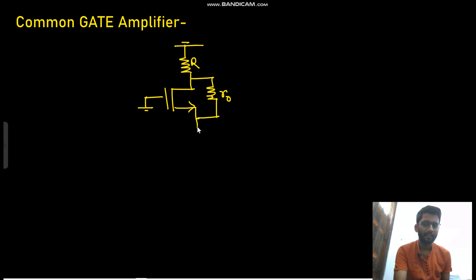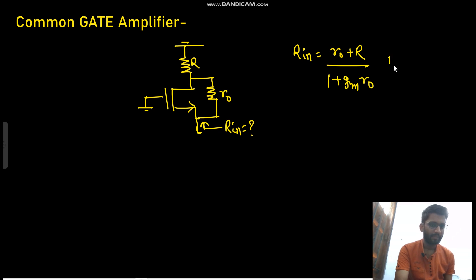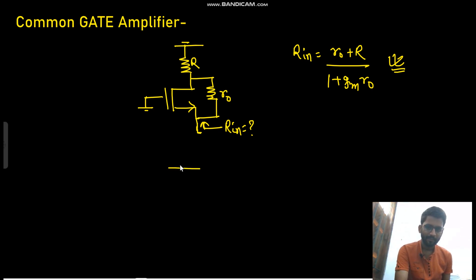Now we are talking about the input resistance — the resistance looking from this end — which I'll call R_in. Most people remember R_in equals (R_naught + R) / (1 + gm·R_naught). You should remember this formula, but we can derive it as well. I'll give you a different approach from the standard one.